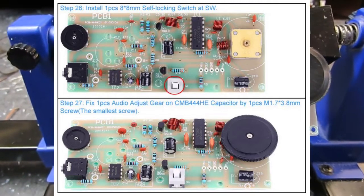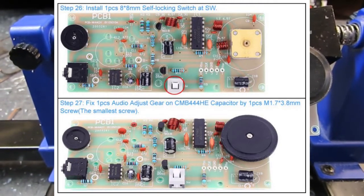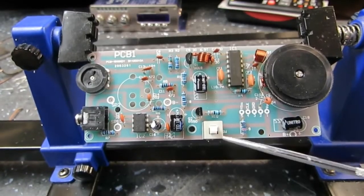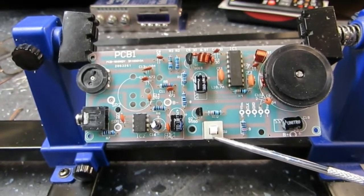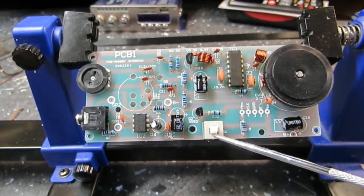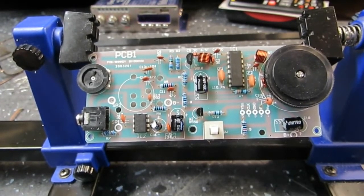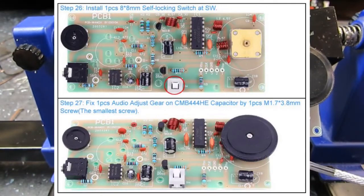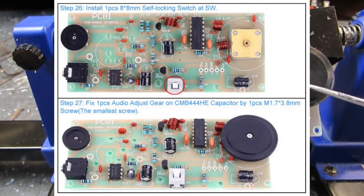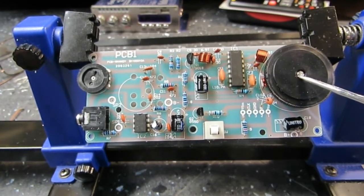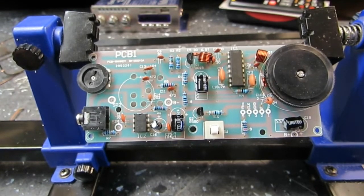We've moved on to step 26 and 27. 26 is installing the on-off switch right here. Six pins. It doesn't say anything about which way it went in. So I just installed it that way. I don't know how else to do it. The other one is to put the knob on here. And it says to use the smallest screw. And that's the smallest screw I could find. And it is installed. On to the next step.